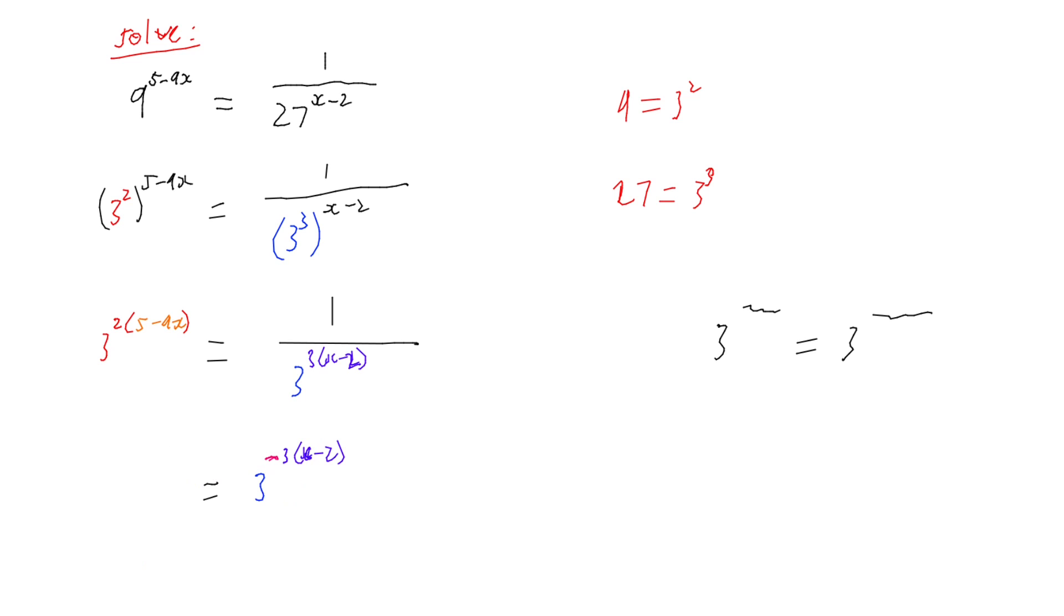And then my left hand side, well while I'm here I might as well tidy it up. I've got 3, multiply that 2 in, so we've got 10 minus 18x.